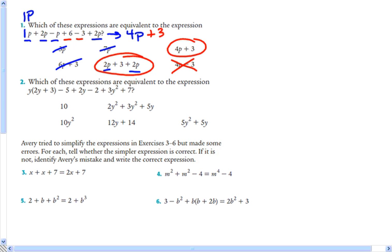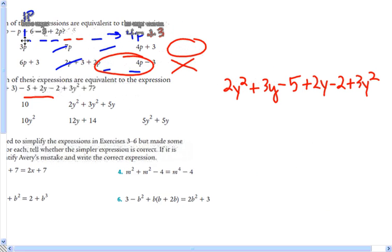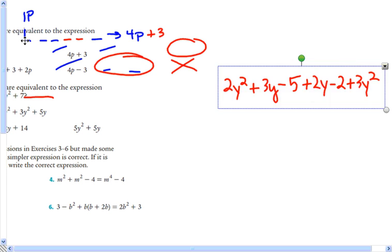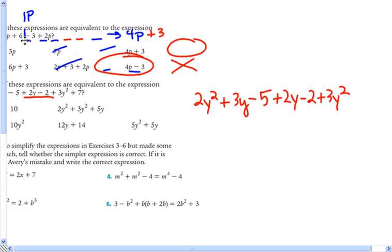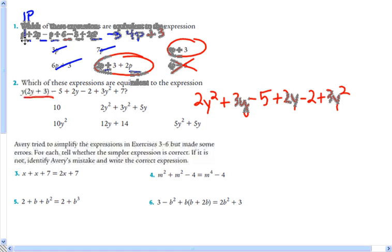Okay. On this next one, before I look for like terms in this one, we have to use the distributive property on that. So I'm going to rewrite it over here. Y times 2y is 2y to the second. And y times 3 is 3y. We learned how to do that in the last lesson. Minus 5 plus 2y minus 2 plus 3y squared. So we're going to rewrite it over here. And then on the end, 3y squared.